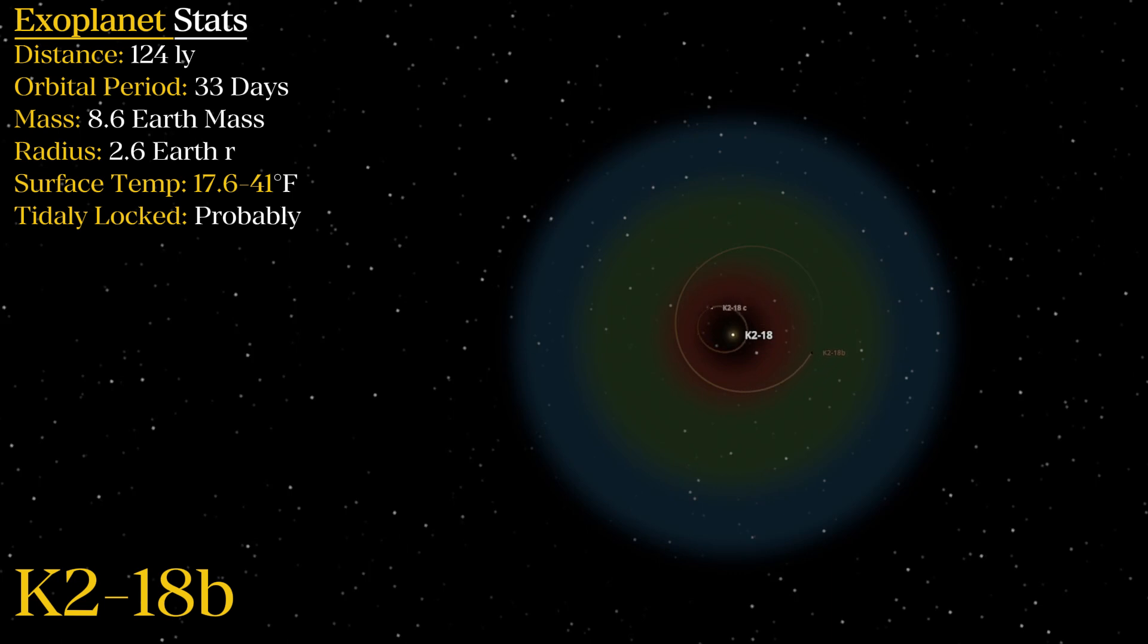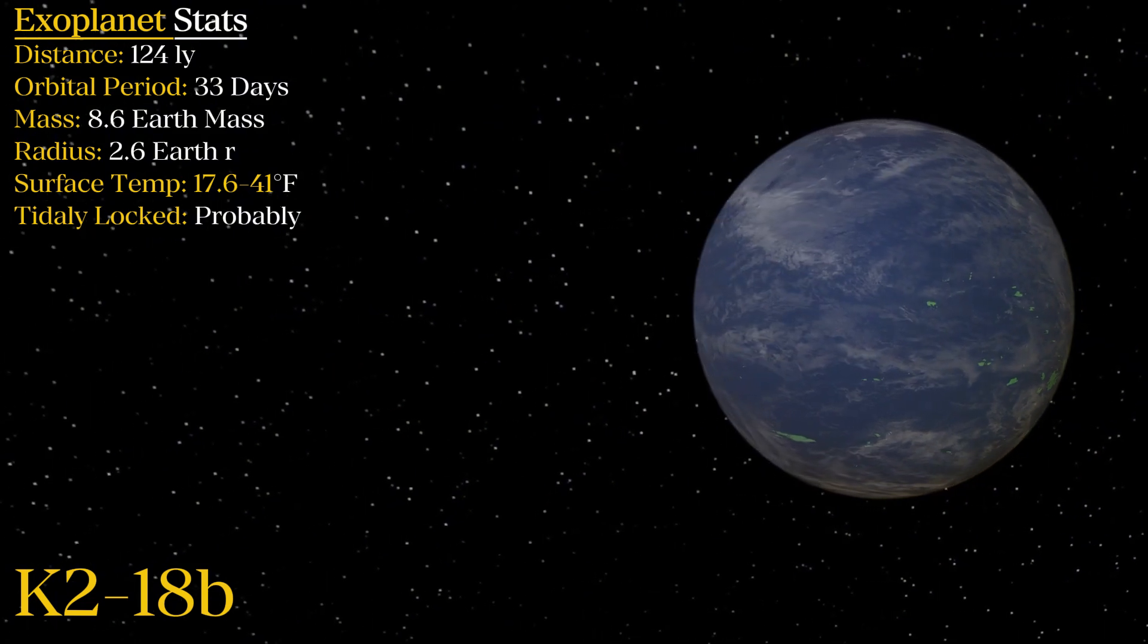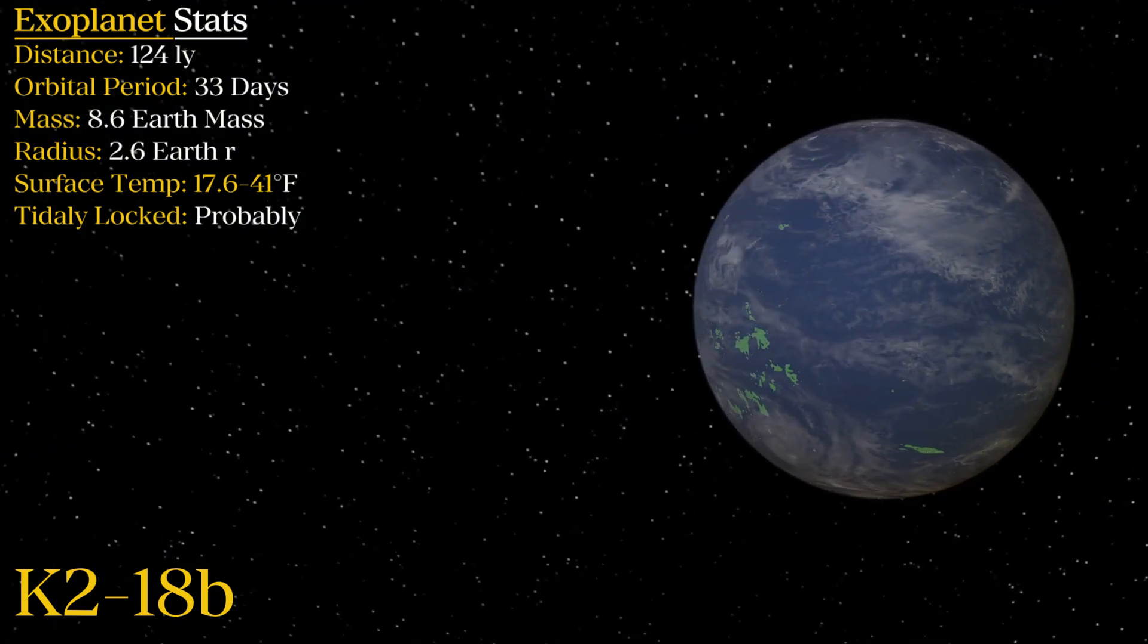This exoplanet sits 124 light years away from Earth and orbits around the star K2-18, rather fast at a mere 33 Earth days. It is estimated to have a radius of 2.6 times that of what we have on Earth, which places it on the larger side for sure.